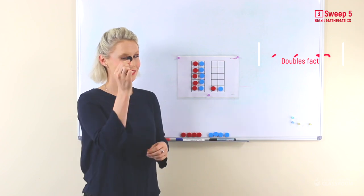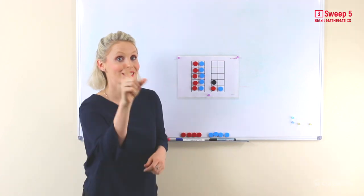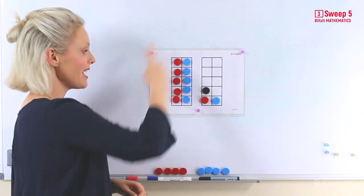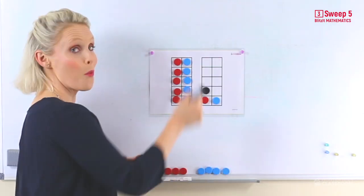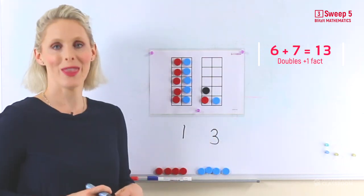Now we need to add our one. What's the answer? Don't count. You should be able to see one group of ten and three is thirteen.